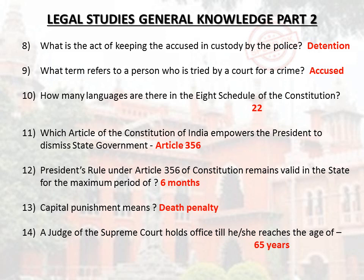How many languages are there in the 8th schedule of the constitution? 22. Which article of the Constitution of India empowers the president to dismiss state government? Article 356. President's rule under Article 356 of the constitution remains valid in the state for the maximum period of 6 months. Capital punishment means death penalty.